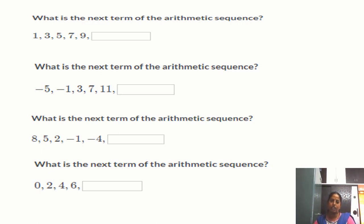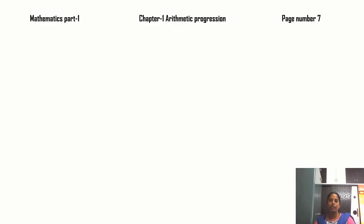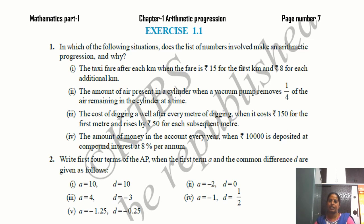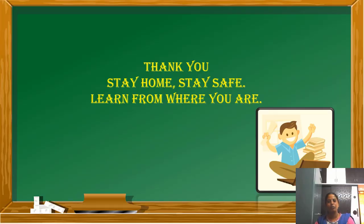Answer all these questions. For practice, refer to Chapter 1 — Arithmetic Progression in Mathematics Part 1, page number 7, Exercise 1.1. Please solve the two problems there. I think all of you are now clear with the meaning of arithmetic progression and its general form. Thank you. Stay home, stay safe, and learn from where you are. Thank you, children.